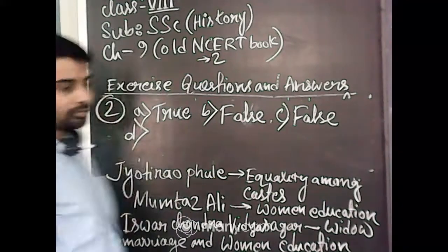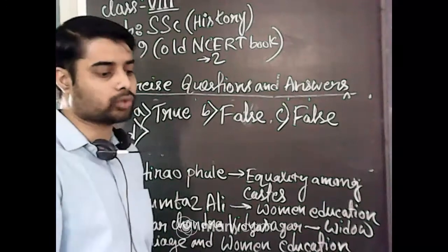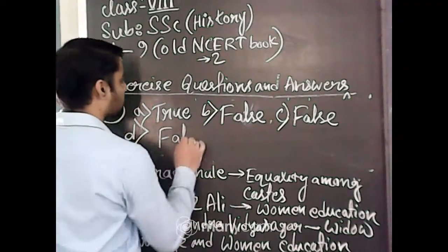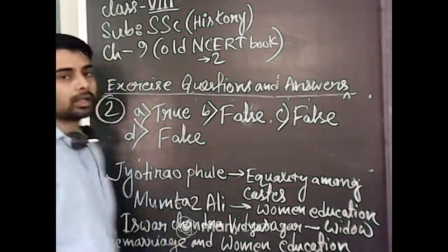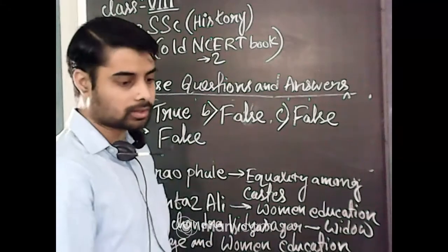Number D, the Child Marriage Restraint Act was passed in 1829. It is also a false statement. Because Child Marriage Restraint Act was passed in 1929 after 100 years.